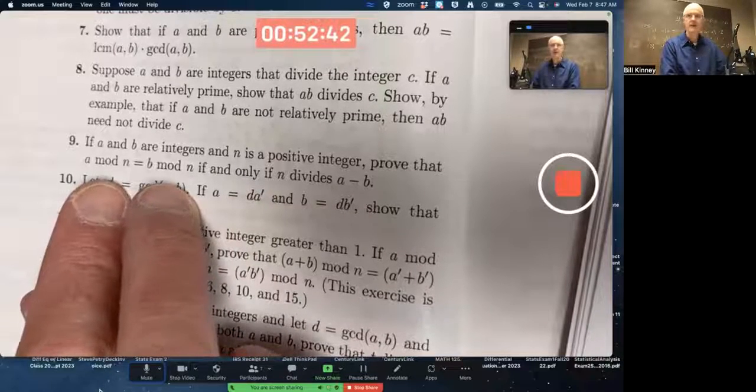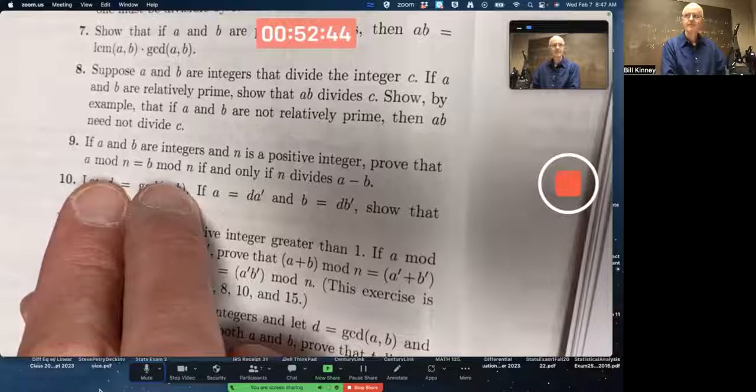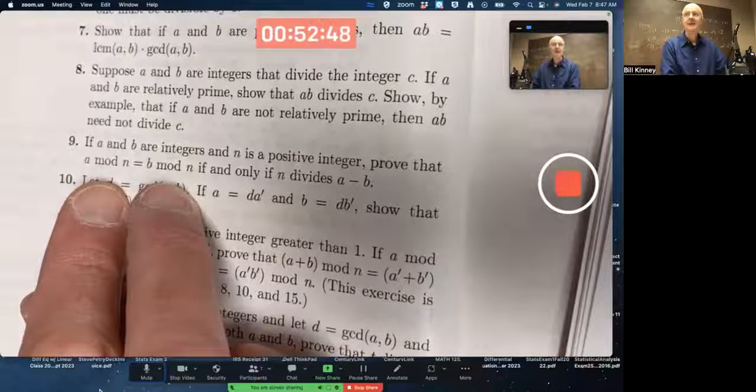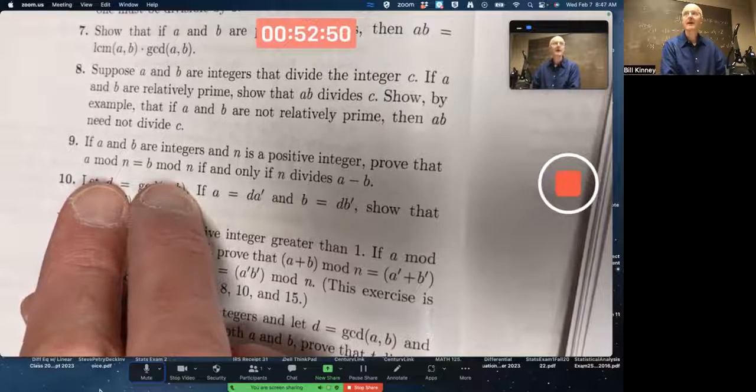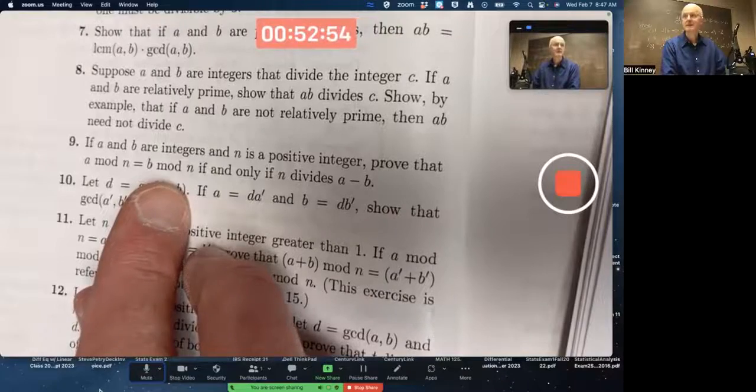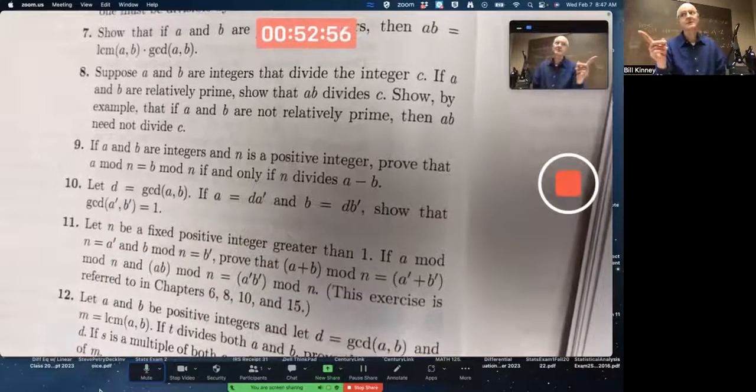Assume A mod N equals B mod N. Meaning, when you divide A by N, get a quotient and remainder, and divide B by N, get a quotient and remainder, the remainders must be the same. Not necessarily the quotients.